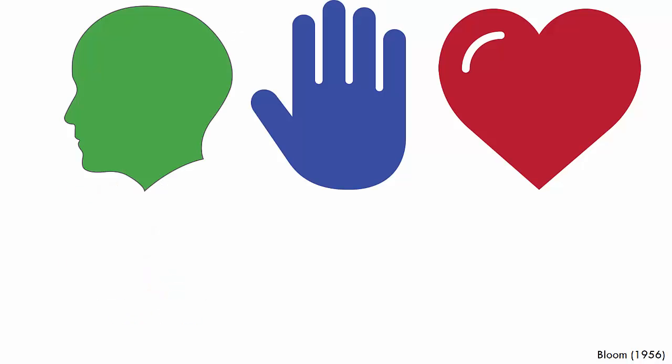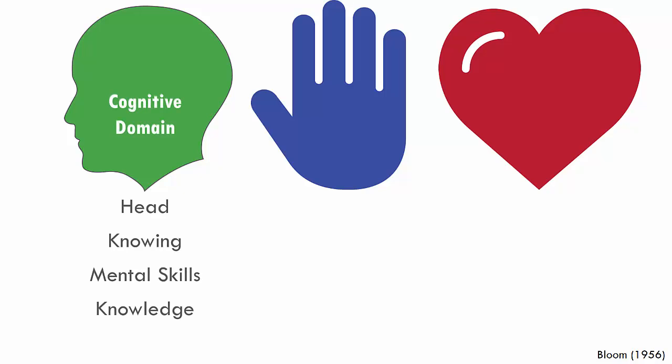He wrote of three types of learning. The cognitive domain — that's the thinking — including intellectual abilities, comprehending information, organizing ideas, and evaluating information and actions.